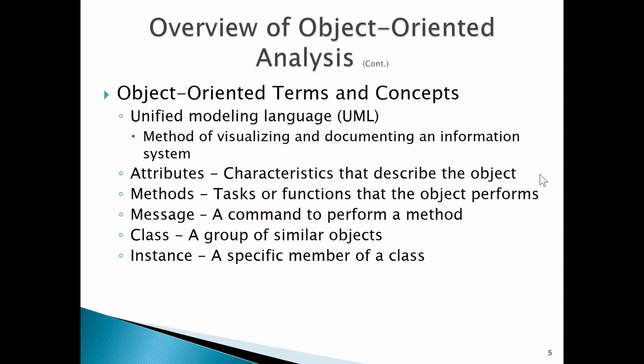A class is a group of similar objects. We might talk about class human being, class mammal, and then start describing mammals, subclasses of mammals, sub-subclasses — you get the idea. An instance is a specific member of a class. So when we instantiate this object, we're doing it based on one unique person in the mammal class, for example.